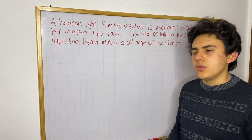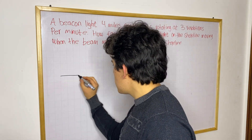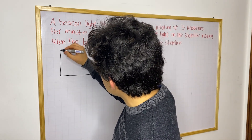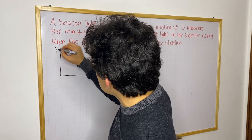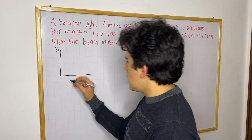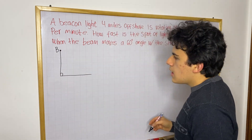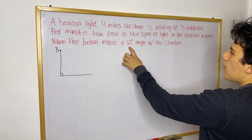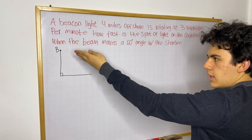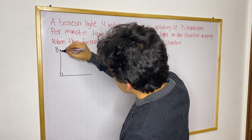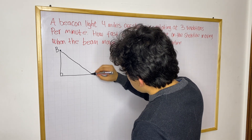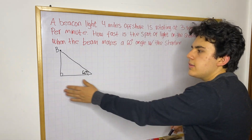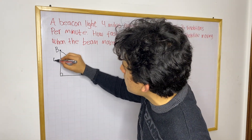So now let's make a diagram of this situation. We know we're going to have a shoreline, and we know there will be a beacon four miles offshore. So this would be our beacon, which I'm just going to call point B. This would be our shoreline, and we know this would be a 90-degree angle. There's also going to be a 60-degree angle between the shoreline and the beam coming from the beacon. So we know this is going to be four miles.